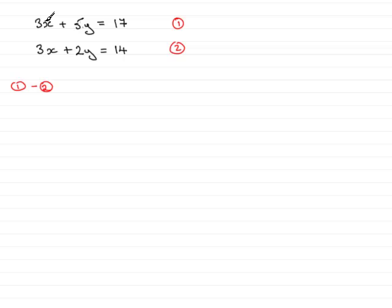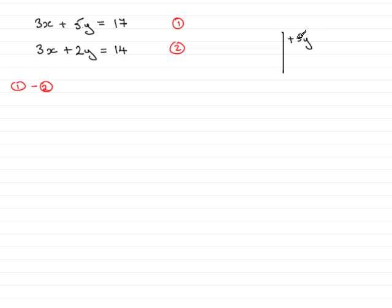By doing that, we've got 3x minus 3x, and that comes to 0, so I won't bother writing it in. Then we have plus 5y — be very careful with these things, make sure you always put the sign, think of the sign that's in front of your term. Plus 5y, then we're going to subtract the next term, which is plus 2y. When you have a minus and a plus together, because they're different, they are replaced with a minus. So we have plus 5y minus 2y, and if we work that out, we have 3y.